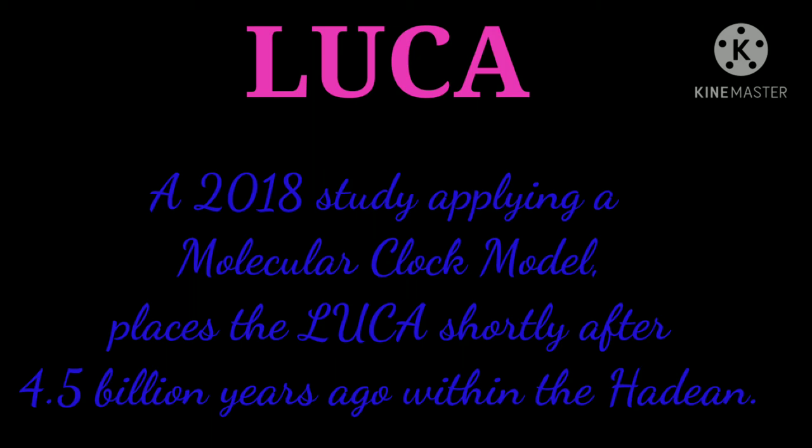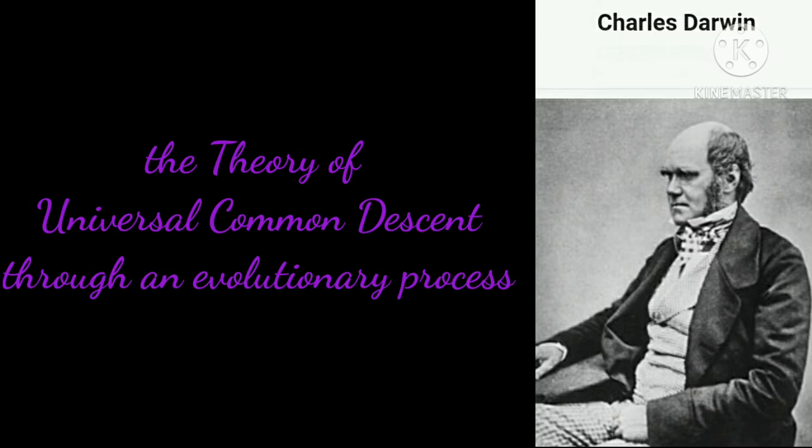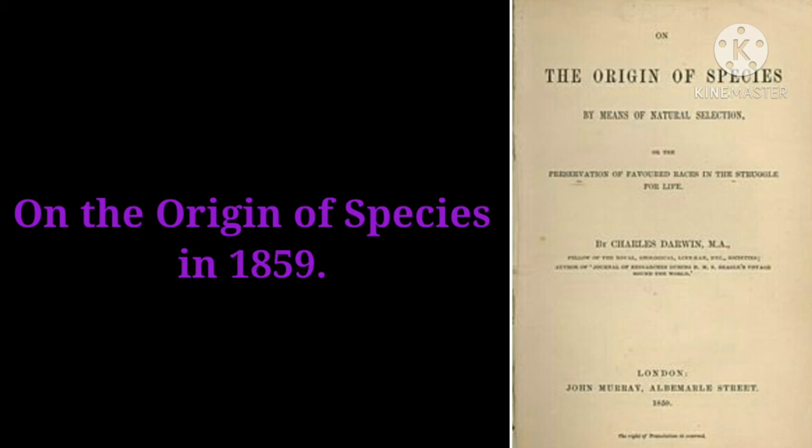Charles Darwin first proposed the theory of universal common descent through an evolutionary process in his book On the Origin of Species in 1859.